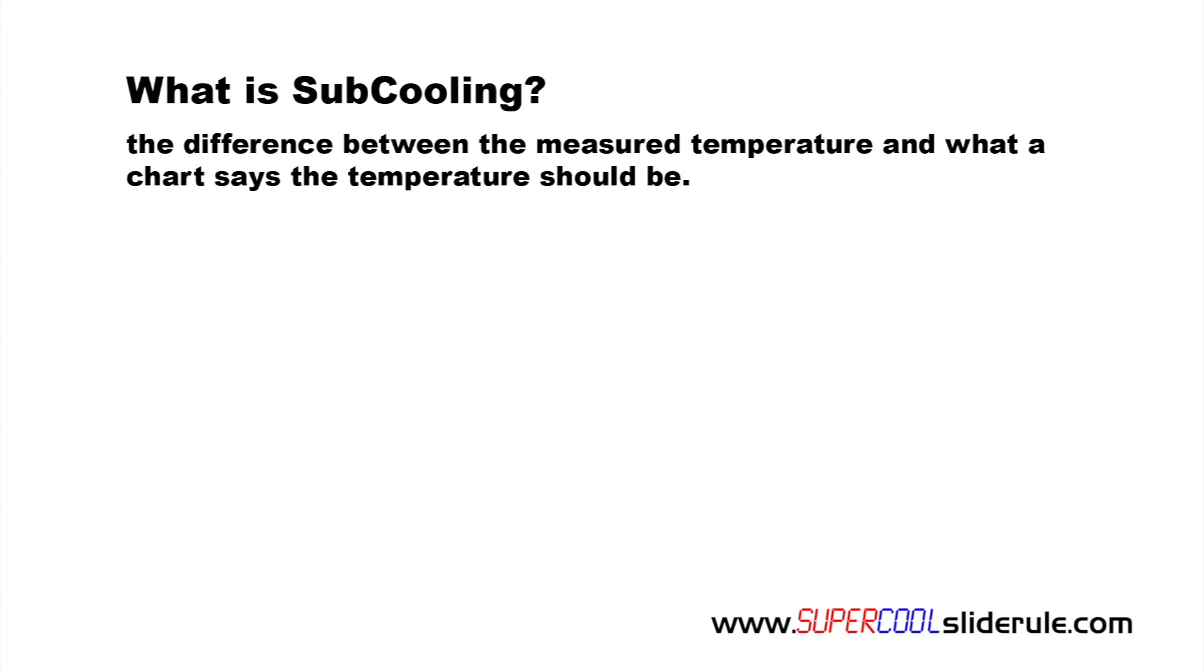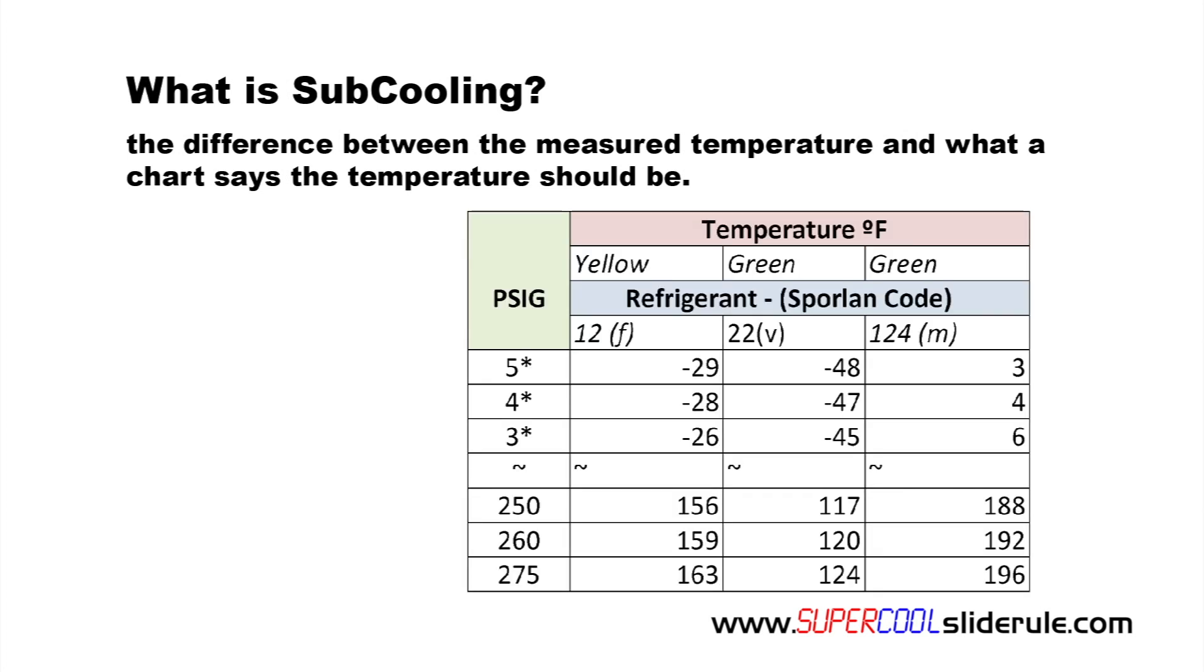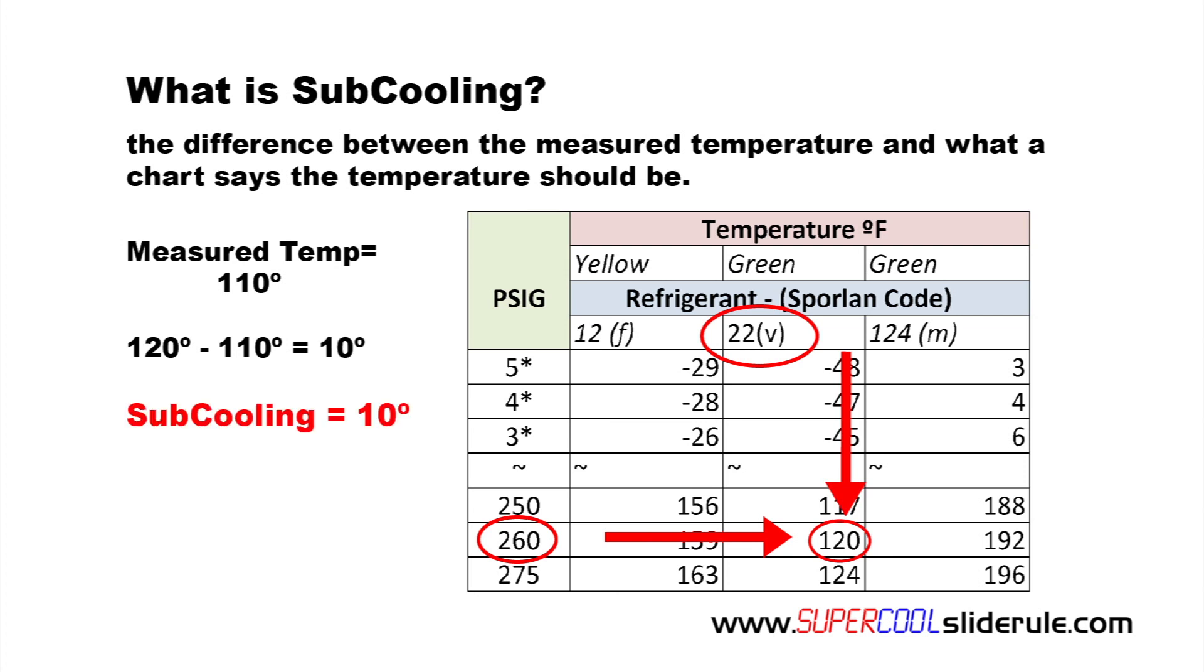Subcooling is simply the difference between the measured temperature and what a chart says the temperature should be. Here is an example. If we reference a temperature chart for R22, we will note that at 260 PSIG, our temperature should be 120 degrees. If we measure the temperature of the refrigeration liquid line and it is actually 110 degrees, this is 10 degrees cooler than it should be, so our subcooling is 10 degrees. Believe it or not, it is that simple.